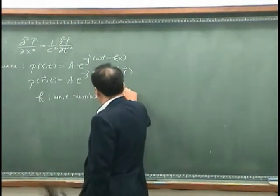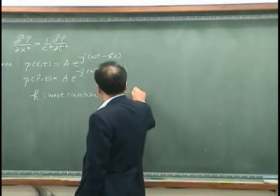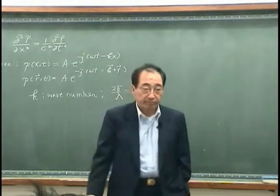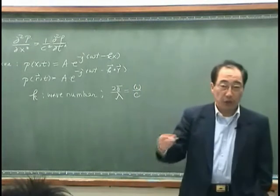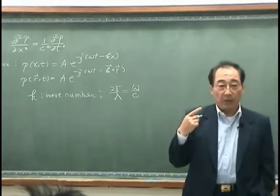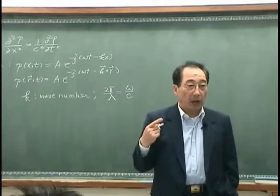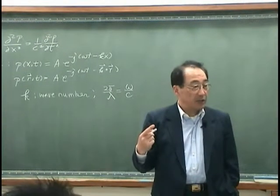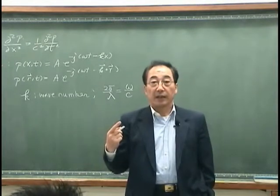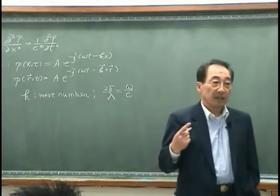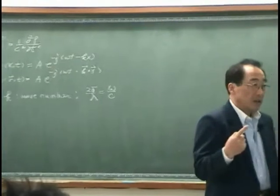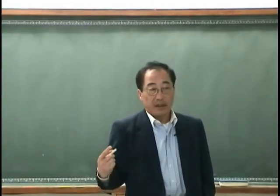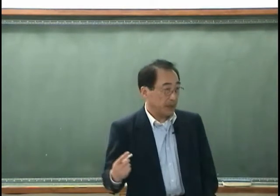k is 2 pi over lambda, or omega over c. The relation between k and omega is normally reported as the dispersion relation, which relates the way oscillations occur in time and the way oscillations occur in space.